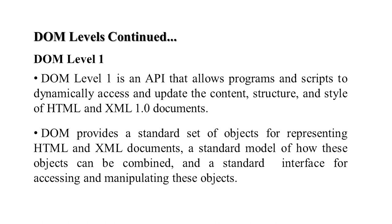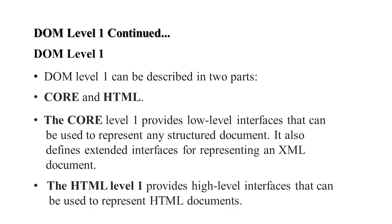DOM level 1 is an application programming interface which allows programs and scripts to dynamically access and update the content, structure, and style of HTML and XML. It provides a standard set of objects for representing HTML and XML documents, how they can be combined, and a standard interface for accessing and manipulating these objects. Level 1 has two parts: core, which provides a low-level interface for any structured document, and HTML, which provides a high-level interface for HTML documents.